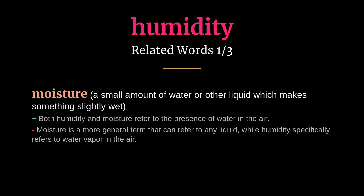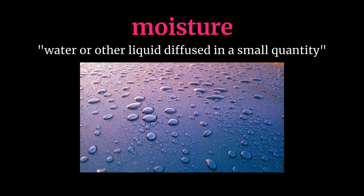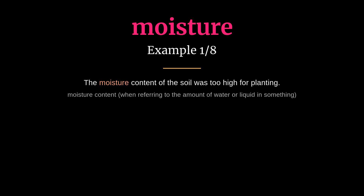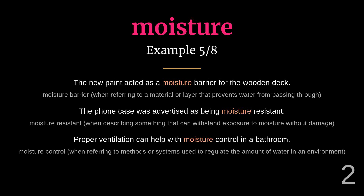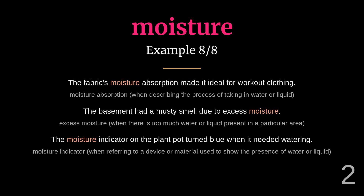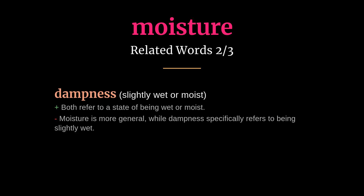Related words: moisture, dampness, mugginess. Moisture — meaning water or other liquid diffused in a small quantity. The moisture content of the soil was too high for planting. The moisture level in the air was causing the furniture to warp. Related words: humidity, dampness, dew.